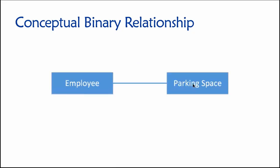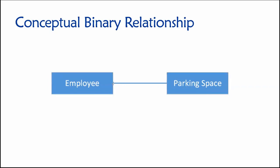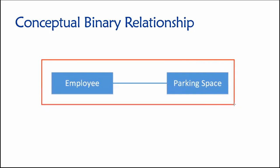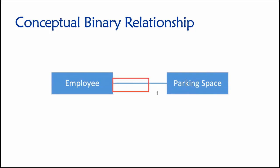That's a conceptual unary. Conceptual binary is very familiar and by far the most common type of relationship we encounter. Here we have employees and parking spaces with some sort of relationship between them. Maybe an employee can be assigned to one parking space and a parking space is assigned to one employee. So we have two entity classes — employee and parking space — with a relationship between them. It is a degree two relationship because there are two tables involved.